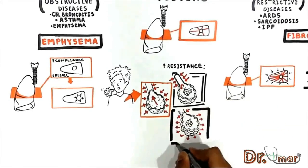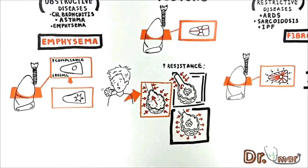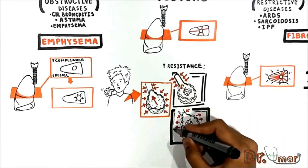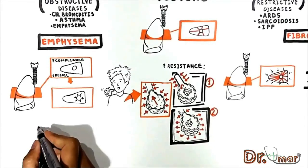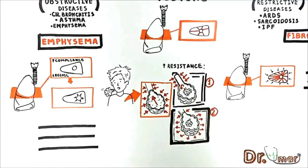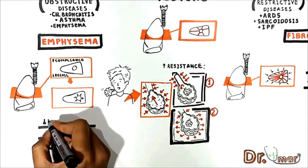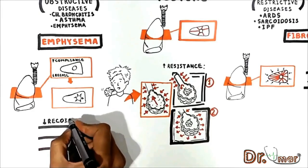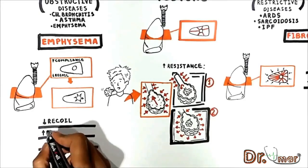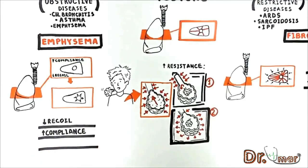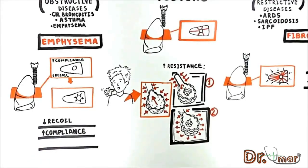As a consequence, over many years this leads to increasing FRC. To sum up, in obstructive lung diseases the recoil decreases while compliance increases. In addition, FRC increases.